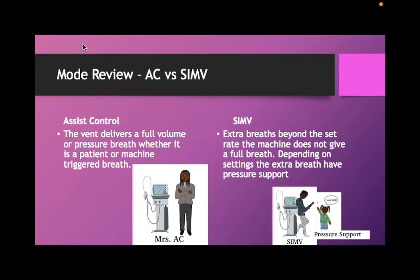SIMV can be a little bit lazy. SIMV says, you told me to give a rate of 20, I'll give 20 breaths a minute. If the patient wants 30, they're on their own. But SIMV's little sister, pressure support, sometimes comes along and helps out. So if we're set at a rate of 20 and the patient wants to breathe at 30, we can program in pressure support to help. In assist control, if the rate is set at 10, the patient gets 10 breaths minimum, and if they want more, the machine gives them more breaths that look identical. In SIMV, if they want more breaths, they have to do more work themselves.